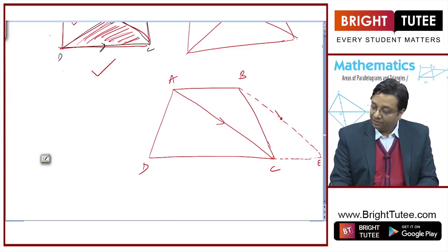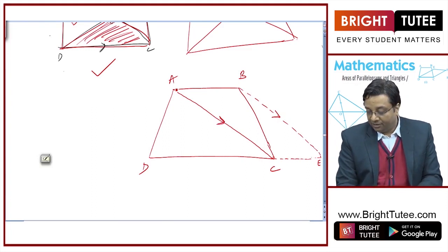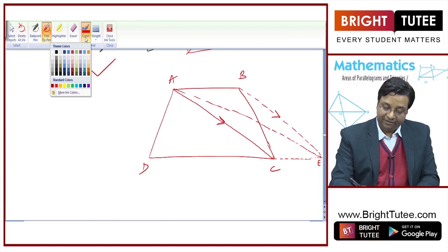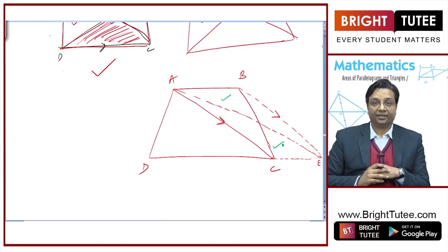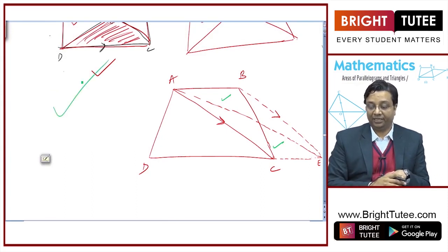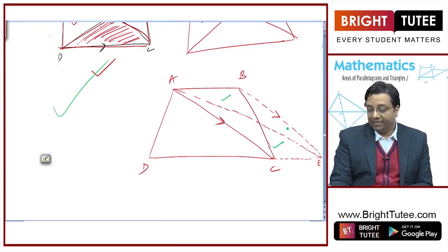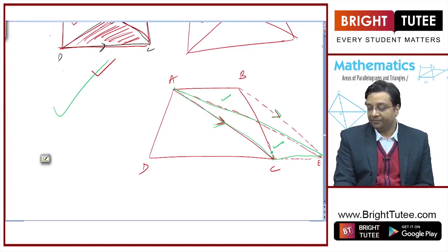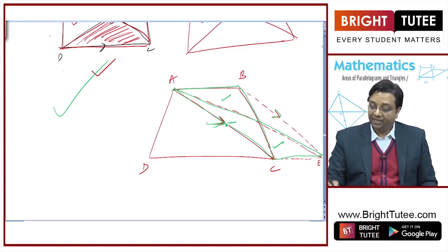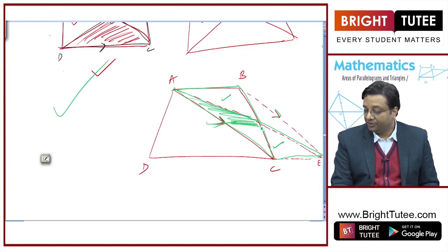Now, by construction, I have drawn this line parallel to AC. If I join A with E, what can I say about this area and this area? Will these areas be equal? Yes, because AC and BE are parallel lines by construction. And these two triangles AEC and ACB lie on the same base AC and between the same parallel lines AC and BE. Hence their areas are equal. And when you subtract the common area, you will get this area equal to this area.